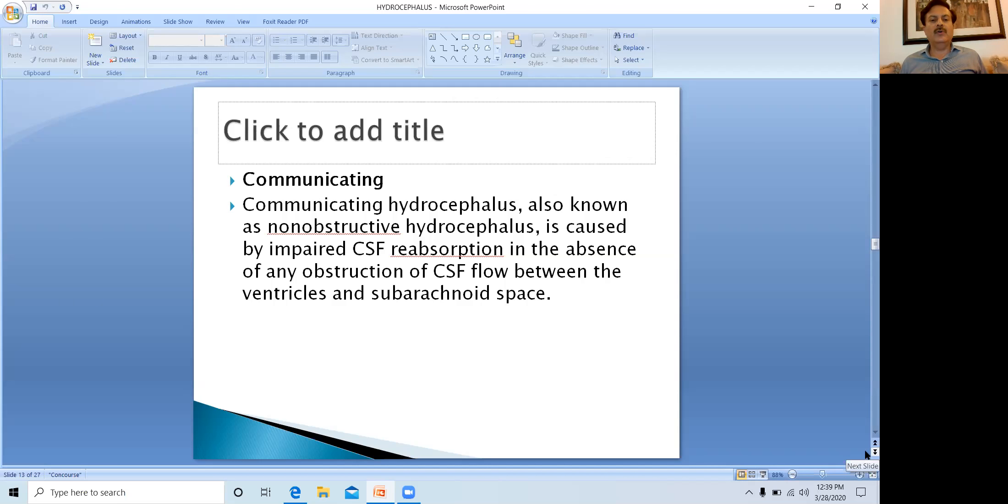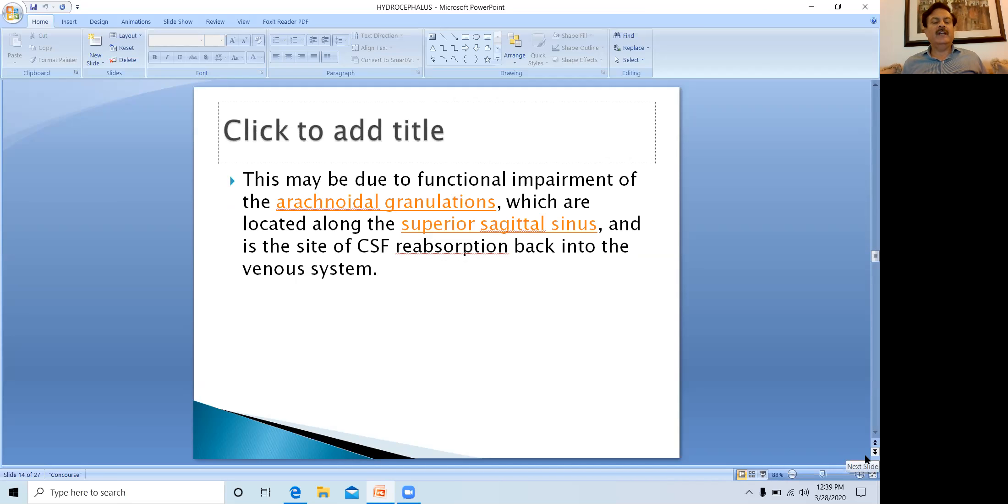Communicating hydrocephalus is also known as non-obstructive hydrocephalus. This is caused by impaired CSF reabsorption in the absence of any obstruction of CSF flow between the ventricles and subarachnoid space. There is no obstruction in communicating hydrocephalus. It can freely flow between the ventricles and subarachnoid space. The main cause is impaired CSF reabsorption, which occurs at the level of the superior sagittal sinus into the venous system. This may be due to functional impairment of the arachnoid granulations.